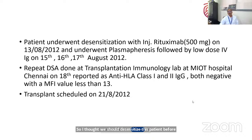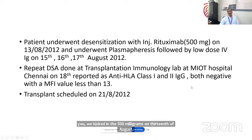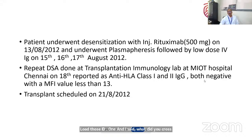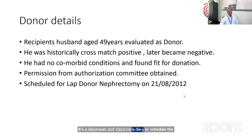Though the literature says Class 2 antibodies are more important than Class 1, even Class 1 carries similar risk for acute antibody-mediated rejection. So I gave rituximab 500 milligrams on 13th of August, followed by plasmapheresis on subsequent three days, and low-dose IVIG. I sent a sample to the Transplant Immunology Lab at my Heart Hospital Chennai on the 18th, and the MFI value was less than 13 for both HLA Class 1 and Class 2. We scheduled the transplant for 21st of August.